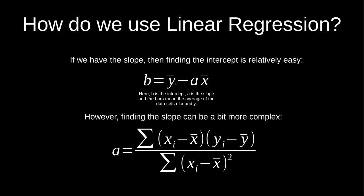To actually get these numbers, you need to give it some training data — data that we already know the answers to. So if you were trying to predict somebody's shoe size based on their height, you could give in the data of the person's height and compare it to their shoe size. The x would be the person's height and the y would be the shoe size. Y-bar means average of the output data, and x-bar is the average of the input data.